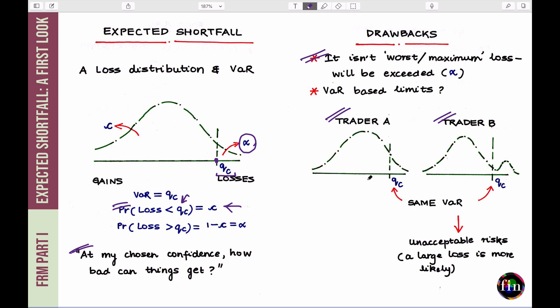Take a look at these two example loss distributions. Both these distributions, it might not look as per my drawing here, but since they have the same VAR, I am assuming that both these positions, they have the same area to the left and to the right, okay? And this number at which this happens, this area is alpha, this area is alpha, this area is C, this area is C, is the same for both distributions. That's what I am saying.